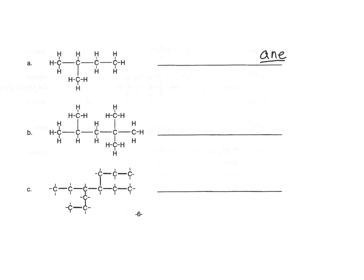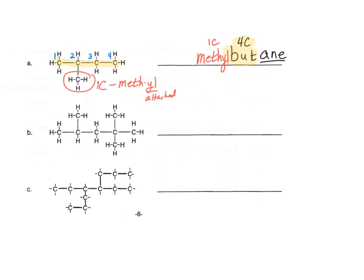Next, we look at the main chain. The main chain in this case has four carbons, so that is but-, giving us butane. We do have a branch — a one-carbon branch. One carbon means meth-, and since it's attached to the main chain we put -yl, making it methylbutane. Now we need to number it. Counting in the forward direction, the methyl group is on carbon two. In the reverse direction, it's on carbon three. We choose the lower of the two numbers, so this is 2-methylbutane.